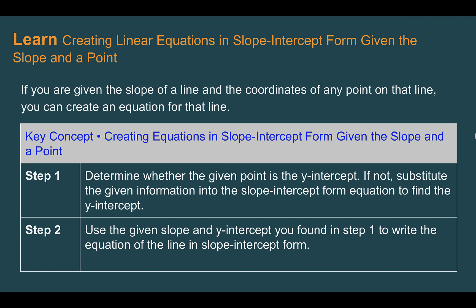Let's learn creating linear equations in slope-intercept form given the slope and a point. If you are given the slope of a line and the coordinates of any point on that line, you can create the slope-intercept form for that line. To do this, first we need to determine if that given point is the y-intercept. If it's not the y-intercept, then we just plug in that coordinate into the slope-intercept form to solve for the y-intercept. Once we know the slope and the y-intercept, then we plug both of those into slope-intercept form.